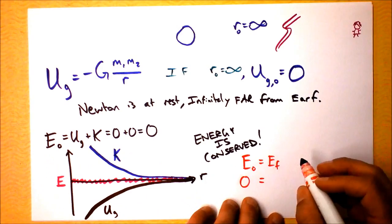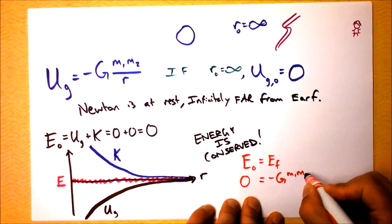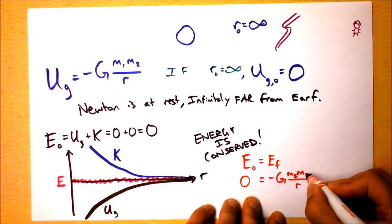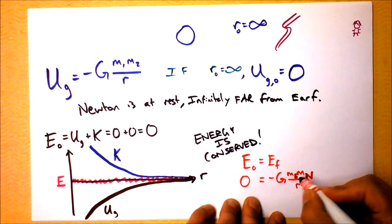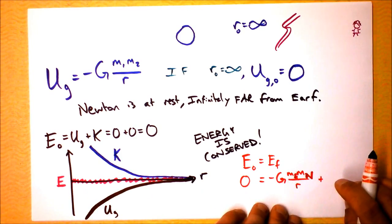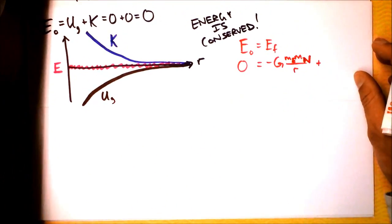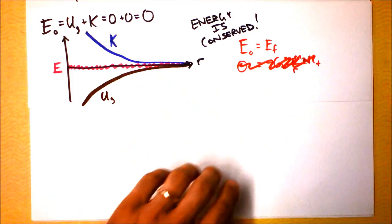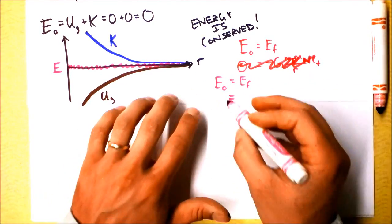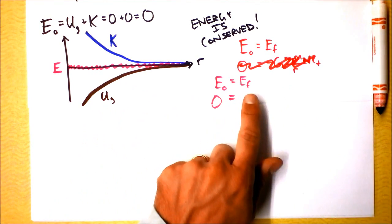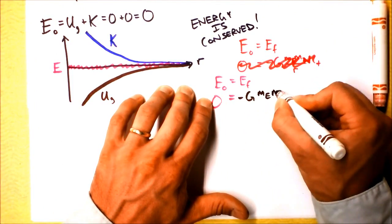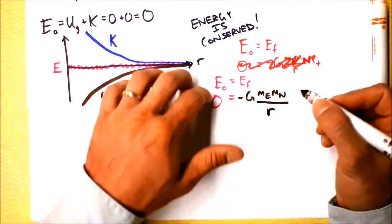Let's put potential first. That's going to be negative G times the mass of Earth times the mass of Newton divided by r. E-naught is E-final. E-naught is zero, and the final energy is made up of negative G times the mass of Earth times the mass of Newton divided by how far away Newton is.